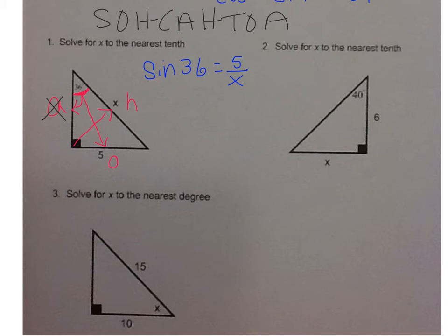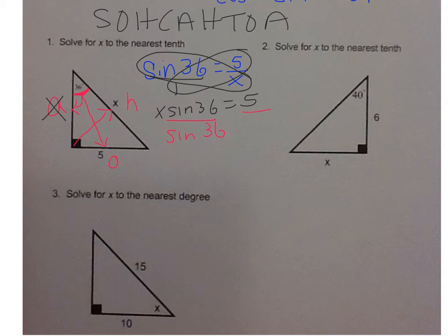All right, so we're going to put sine over 1 and cross-multiply. So when I cross-multiply, I always like to put the x in front of the trig function. So it's x sine 36 equals 5 times 1 is 5. We're solving for x, so divide both sides by sine 36. And then you just plug that in your calculator. So you type in 5 divided by sine 36, and you get 8.5.